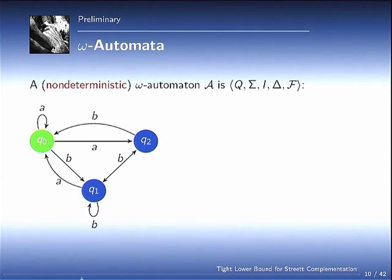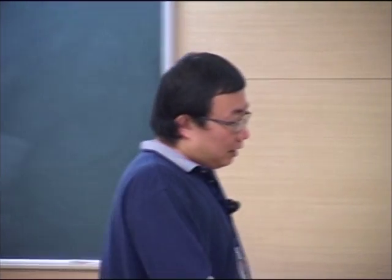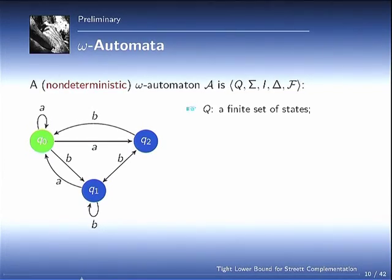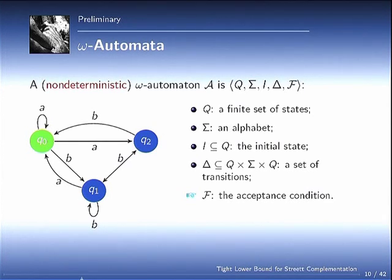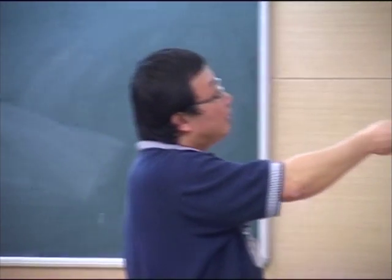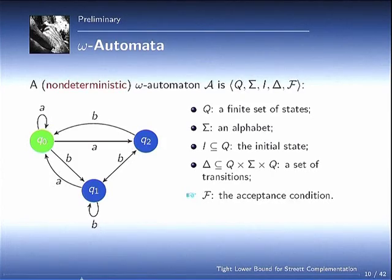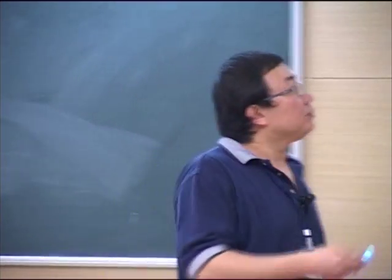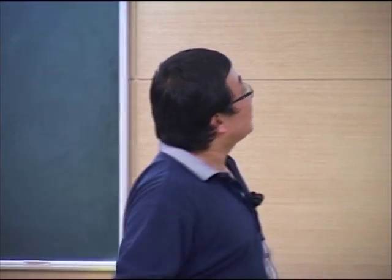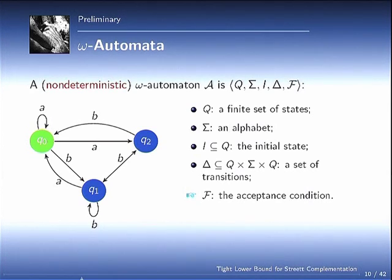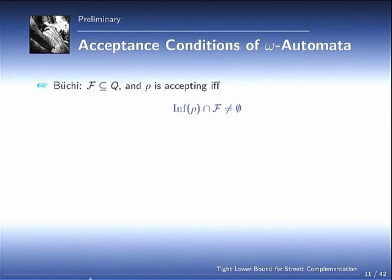So, a quick introduction to notations. Basically, what is omega automata? It's just a classical NFA, non-deterministic automata, with special acceptance conditions. Almost everything is the same as before. Actually, everything is the same as before, except this F could take many forms, and this F is called acceptance conditions. Omega automata is classified according to acceptance conditions.